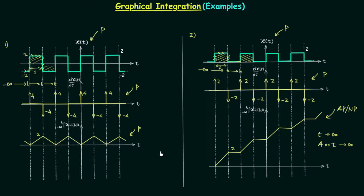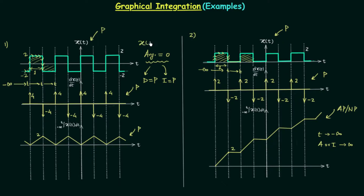We can conclude our discussion using the concept of average. In problem 1, the average of signal xt is equal to 0 because the positive areas are cancelled out by the negative areas. When the average is 0 and the signal xt is periodic, the differentiation of the signal is periodic and the integration of the signal is also periodic. Note this applies only when the given signal xt is periodic — it is not applicable for nonperiodic signals.